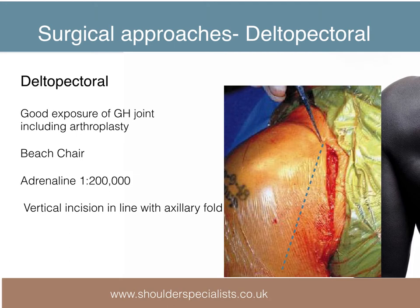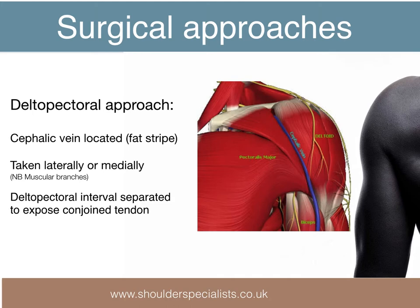If more of the humerus needs to be exposed, an incision angled onto the humerus can be performed instead. The cephalic vein is identified in the fat strip between the deltoid and pec major and can be taken medially where there is less risk of subsequent traction damage, or laterally with the deltoid, which removes the need to cauterize branches from the muscle.